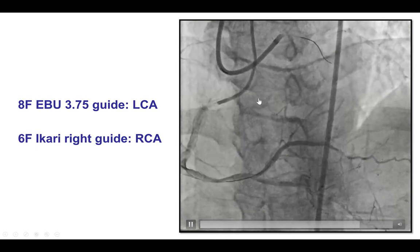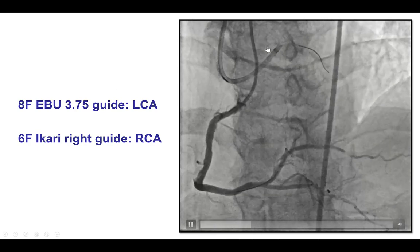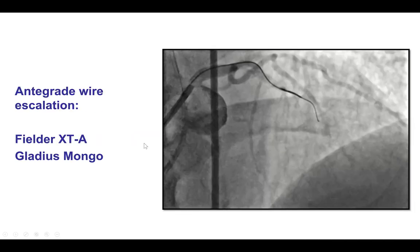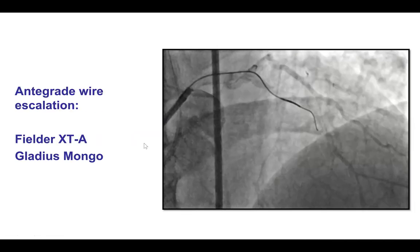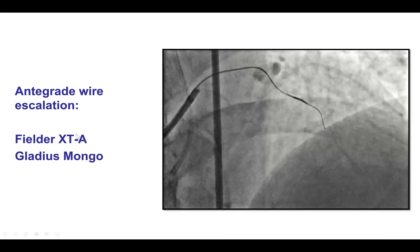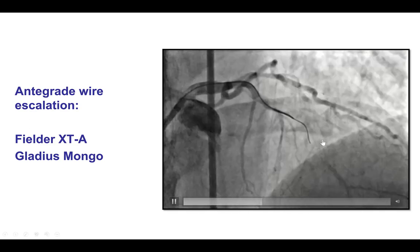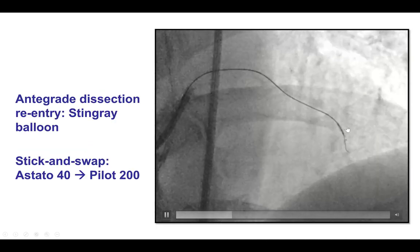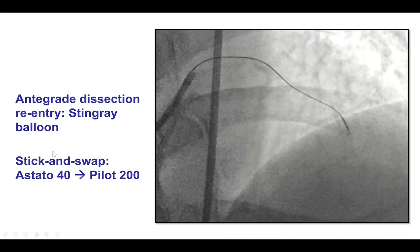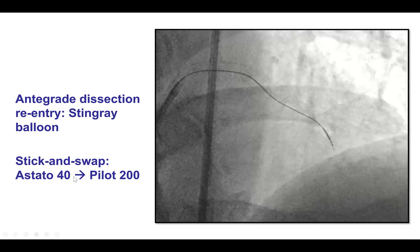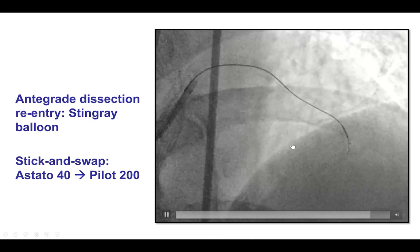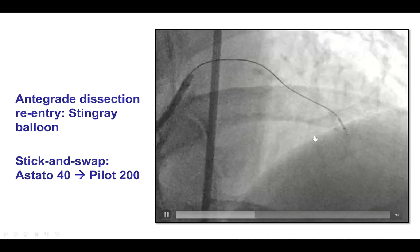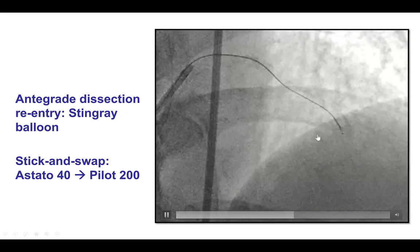We had femoral and radial access with an 8-French guide on the left main as well as a 6-French guide on the right coronary artery. Antegrade wire escalation with polymer-jacketed wires — a Fielder XTA and Mongo — resulted in subintimal guide wire crossing. That is why we used the Stingray balloon together with the double blind stick-and-swap technique with an Astato and a Pilot 200, in an attempt to re-enter into the distal true lumen, but we were unable to do so, possibly because of severe calcification of the LAD.